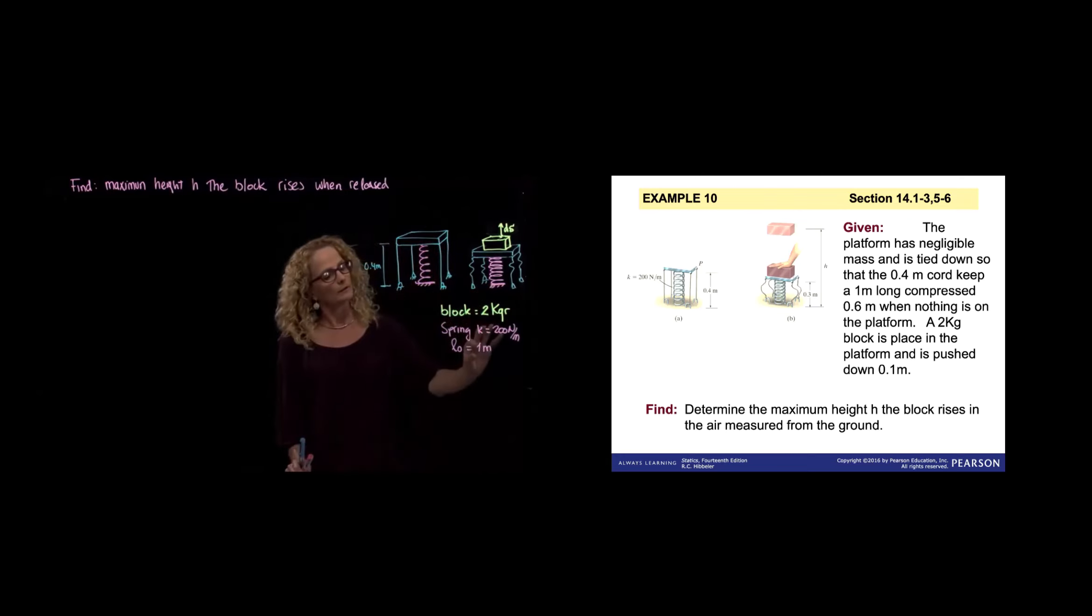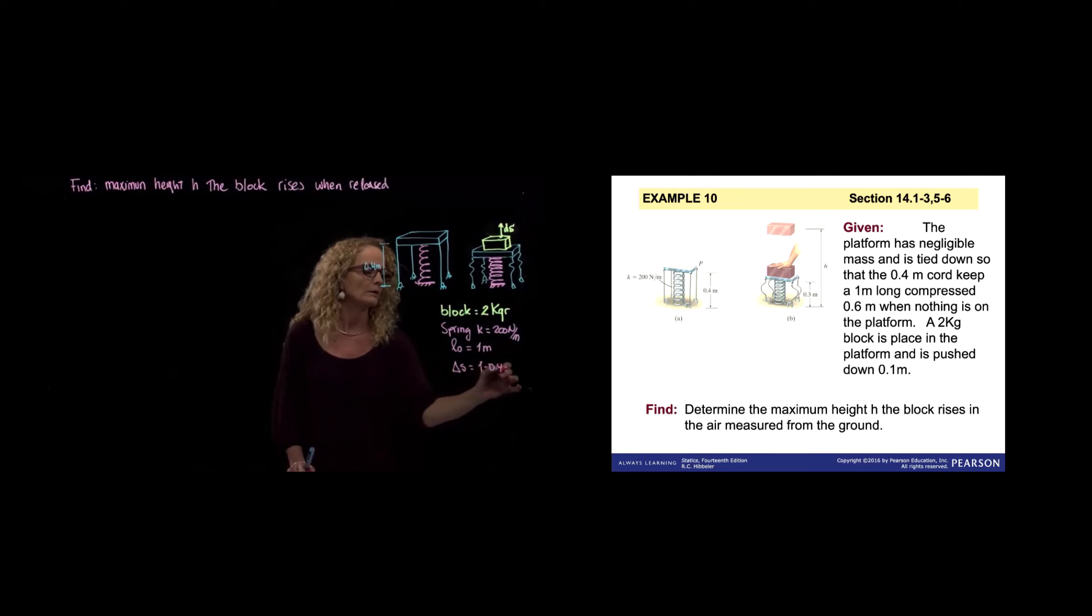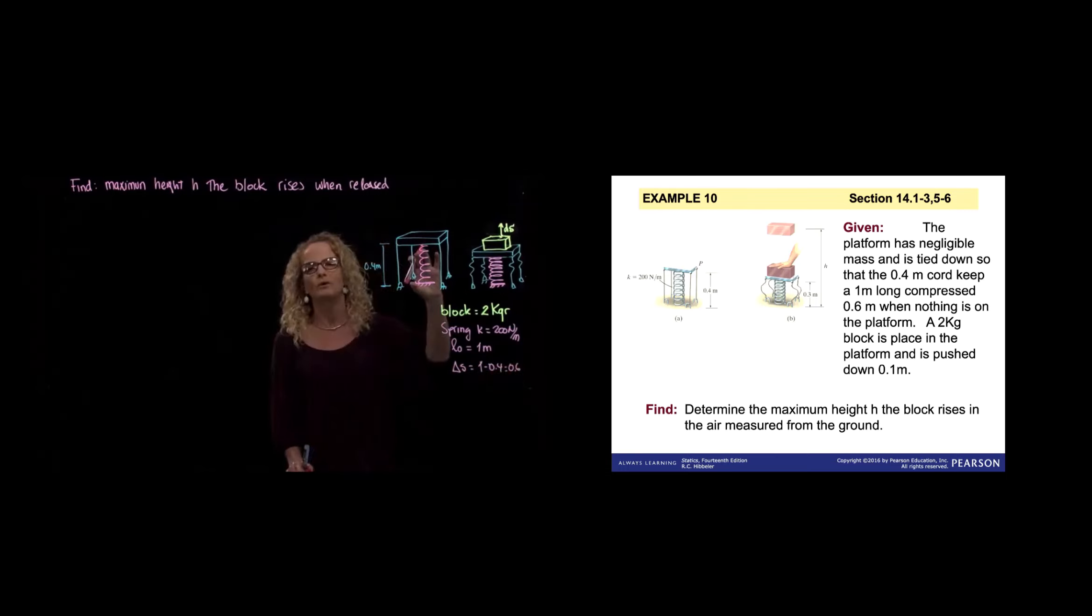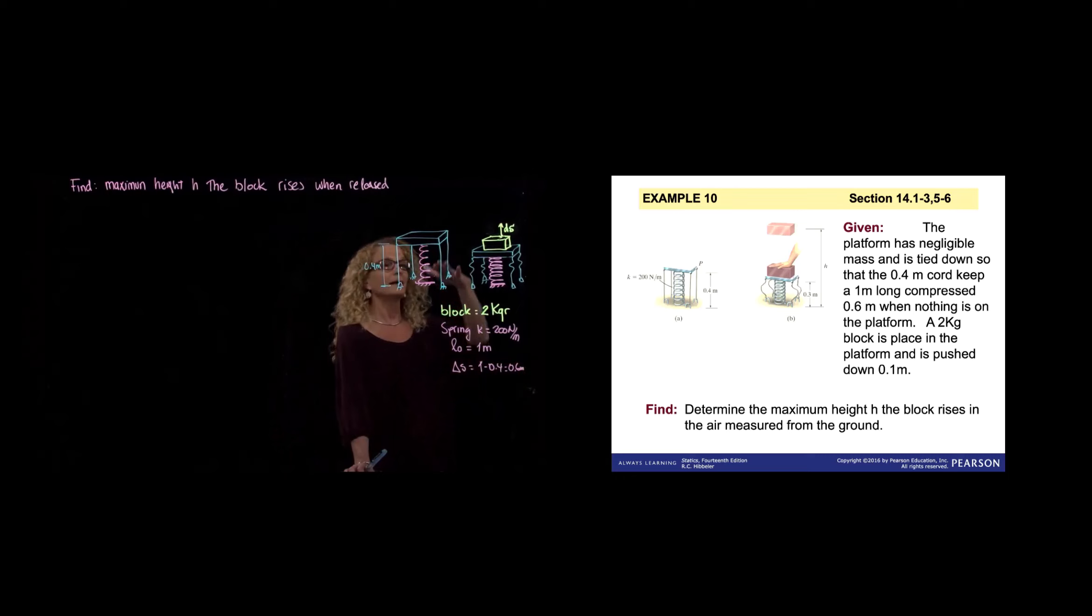Since the unstretched length of the spring is one meter and the length of the strings are 0.4, we already know that the delta s of the spring will be one meter minus 0.4. It's compressed already to 0.6 meters. But then somebody puts a block in the platform and the platform goes down 0.1. So this is 0.1 and this is 0.3. So we compress the spring 0.1 more.